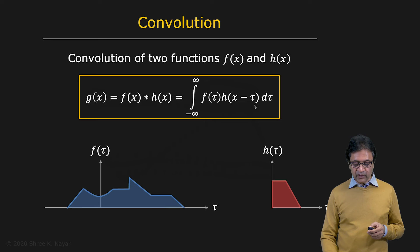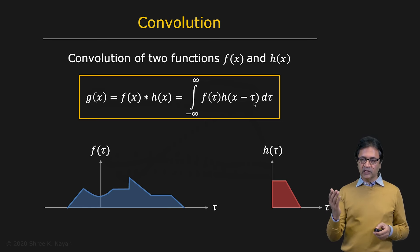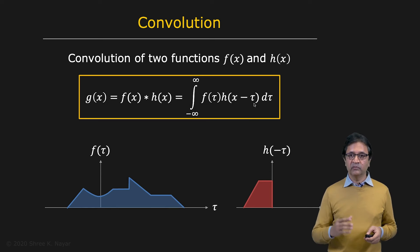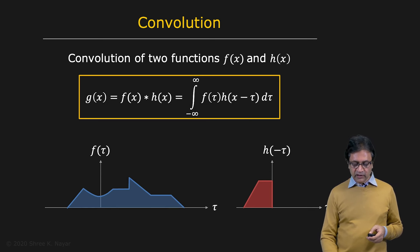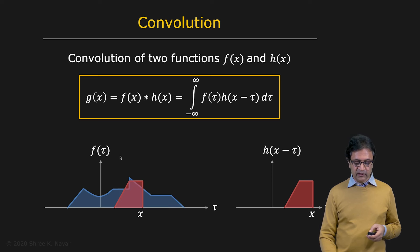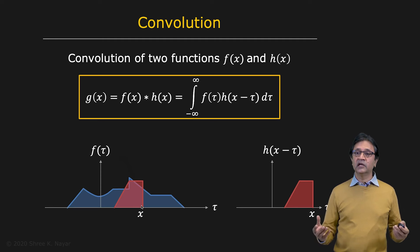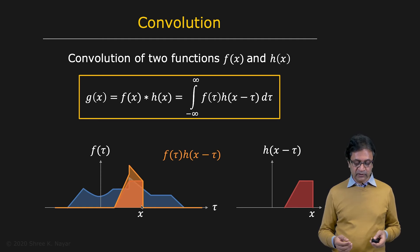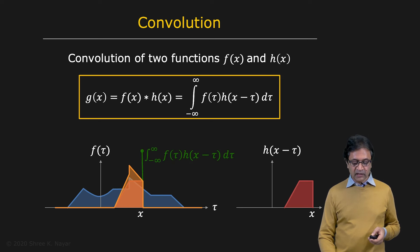And you see here you have minus tau. So the first thing we're going to do is take h of tau and flip it to get h of minus tau. Then you have x minus tau, which represents a shift, so we'll shift it to x. Now you're going to overlay h of x minus tau on f of tau — it sits right there at x. You take the product of these two functions and then integrate from minus infinity to infinity to get a single number. That is the result of the convolution at the point x; that is the value of g at x.